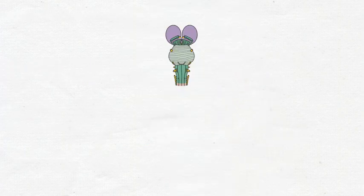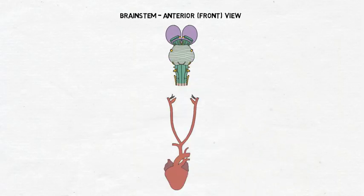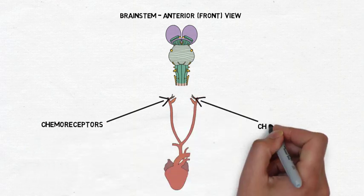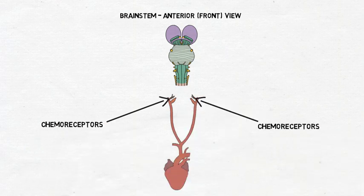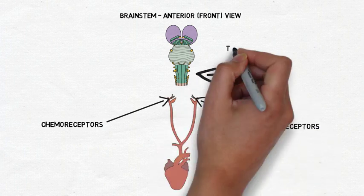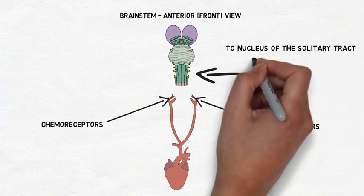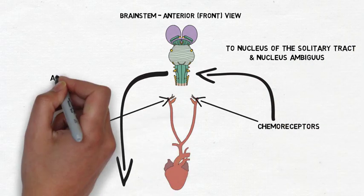The medulla is also responsible for generating breathing movements and for regulating respiration to ensure there is enough oxygen in the blood. To accomplish this, chemoreceptors, which are found inside blood vessels, detect changes in oxygen and carbon dioxide levels in the blood. When oxygen levels fall, neurons in and around the nucleus of the solitary tract and the nucleus ambiguus respond by increasing respiration.